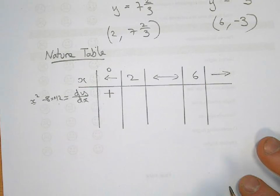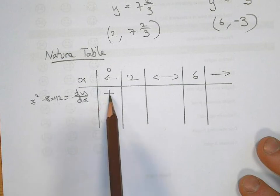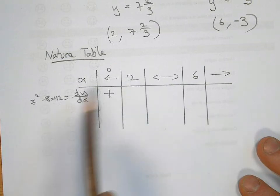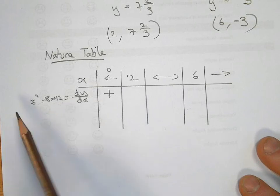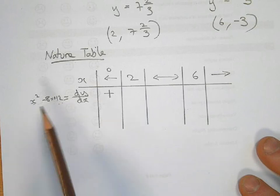That's why they call it a table of signs as well, because we're not worried about what the number is. We just want to know what the sign is, whether it's positive or negative. When we put 2 into here, we should get 0, because that is when the gradient is 0. That's when it turns.